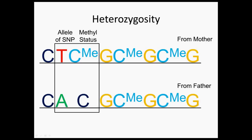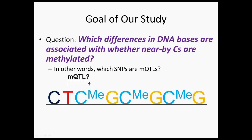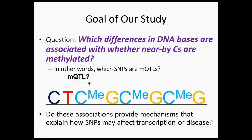We are going to call whether or not a C is methylated in an individual the methylation status of the C. I also need to introduce the concept of heterozygosity. Every piece of DNA in your cell has two copies — one from your mother and one from your father. While there's variation in a base across individuals, there can also be variation across the two copies of DNA within a single individual. Many studies of DNA methylation have not actually accounted for heterozygosity. Our study will be able to do that. The goal of our study is to answer: which SNPs are MQTLs?